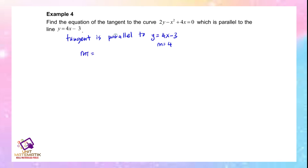The tangent gradient m = 4. To find the point, we use the curve 2y - x² + 4x = 0 and find dy/dx using implicit differentiation: 2(dy/dx) - 2x + 4 = 0.